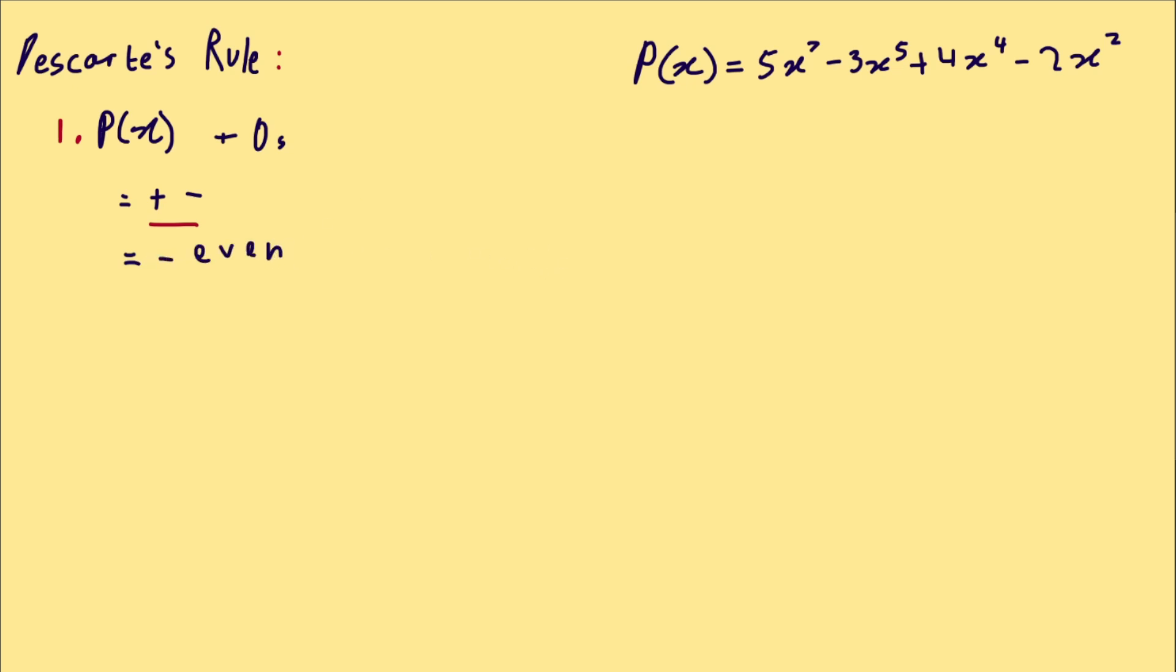So what does this mean? Let's take this polynomial P(x). Let's count the variation in sign. So it starts here at positive 5, right? That's one change. It goes to negative. Then it changes again. That's two changes, three changes. So there's three variations in sign.